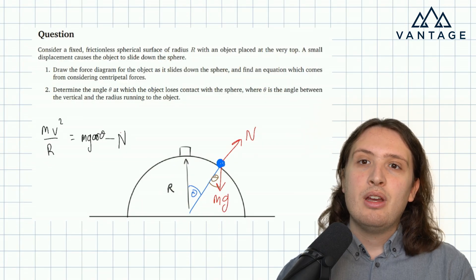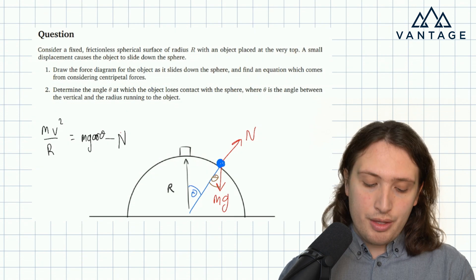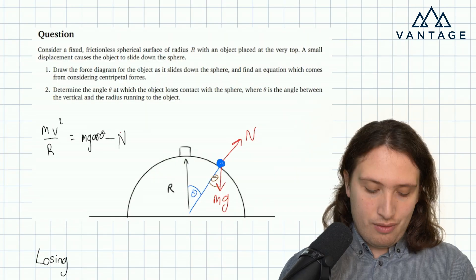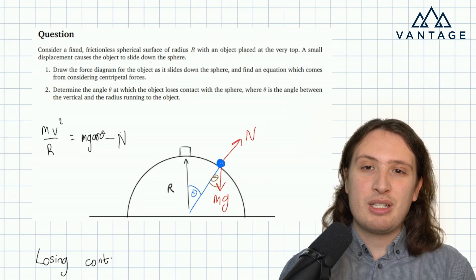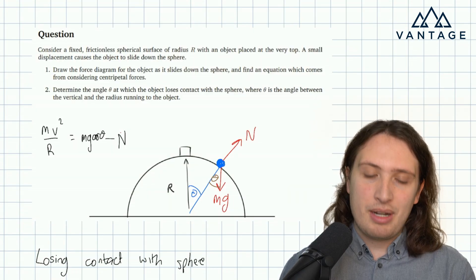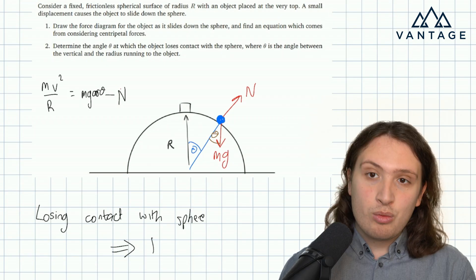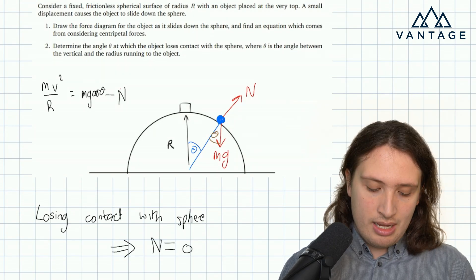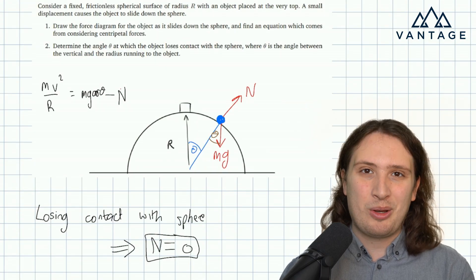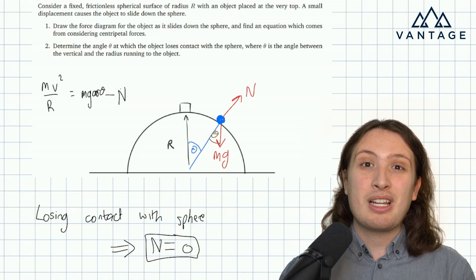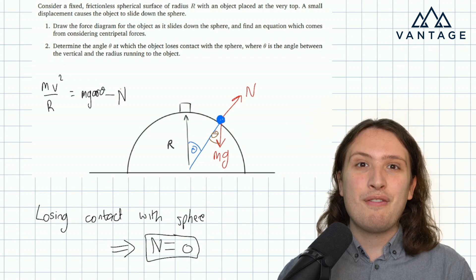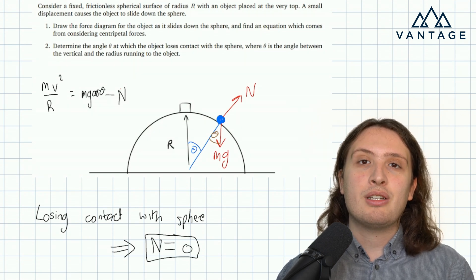So we get mv squared over r equals mg cos theta minus n. So far so good. We now need to think about what the physical constraint is that we get from losing contact with the sphere. The intuition of losing contact with the sphere must correspond to something mathematical. And this is a really important point that comes up in lots of questions. At the moment we lose contact with something, the normal reaction force is going to be equal to zero because you're actually on the point of losing contact and therefore there's going to be an absence of contact forces. So this is usually going to be the condition that we feed into the equations to actually impose the loss of contact.